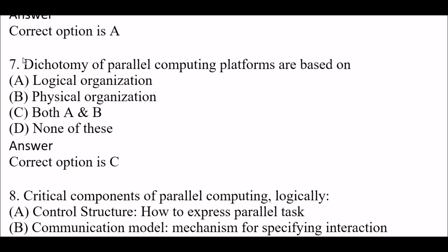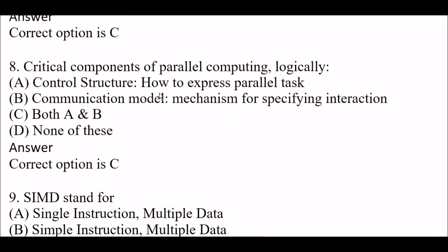Next question: the dichotomy of parallel computing platforms is based on — option A, logical organization; option B, physical organization; option C, both A and B; option D, none of these. The right answer is option C, both A and B. The dichotomy of parallel computing platforms is based on logical organization as well as physical organization.